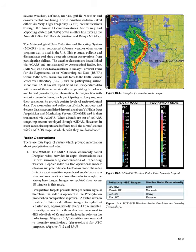Terminal Aerodrome Forecasts (TAF). A TAF is a report established for the 5-statute mile radius around an airport. TAF reports are usually given for larger airports. Each TAF is valid for a 24 or 30-hour time period and is updated 4 times a day at 0000Z, 0600Z, 1200Z, and 1800Z. The TAF utilizes the same descriptors and abbreviations as used in the METAR report.